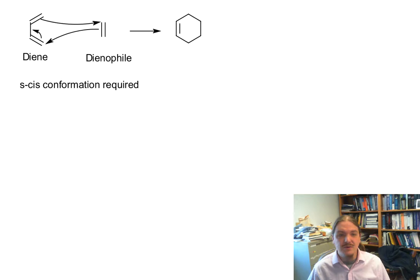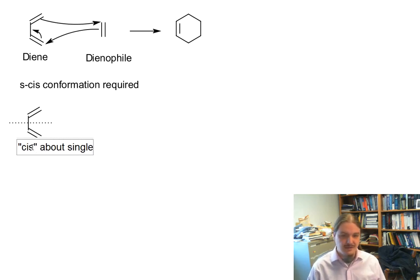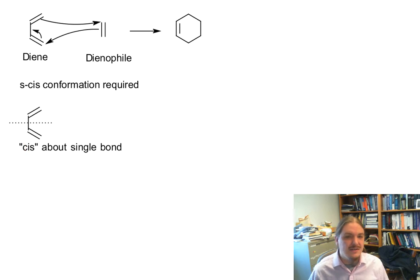The Diels-Alder reaction requires something called the S-cis conformation, and it's the way that I've drawn my diene above. And what it really means is about this single bond. It looks like that this thing is cis about the single bond. This geometry is required for the Diels-Alder reaction to happen.